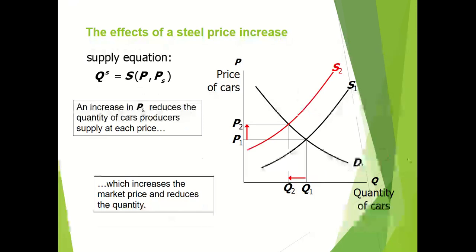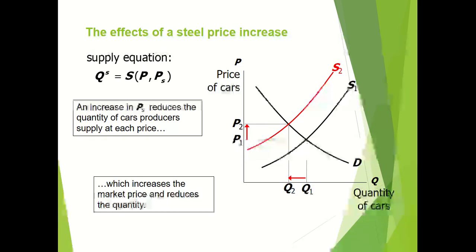Now consider the effects of a steel price increase. Quantity supplied is a function of the price of car and the price of input, which is steel. Steel is one of the inputs used to manufacture cars. If the price of steel increases, then the cost of producing cars also increases. When cost of production increases, supply will decrease and the supply curve shifts to the left from S1 to S2. This shift in the supply curve is due to the change in the price of input, i.e., steel.